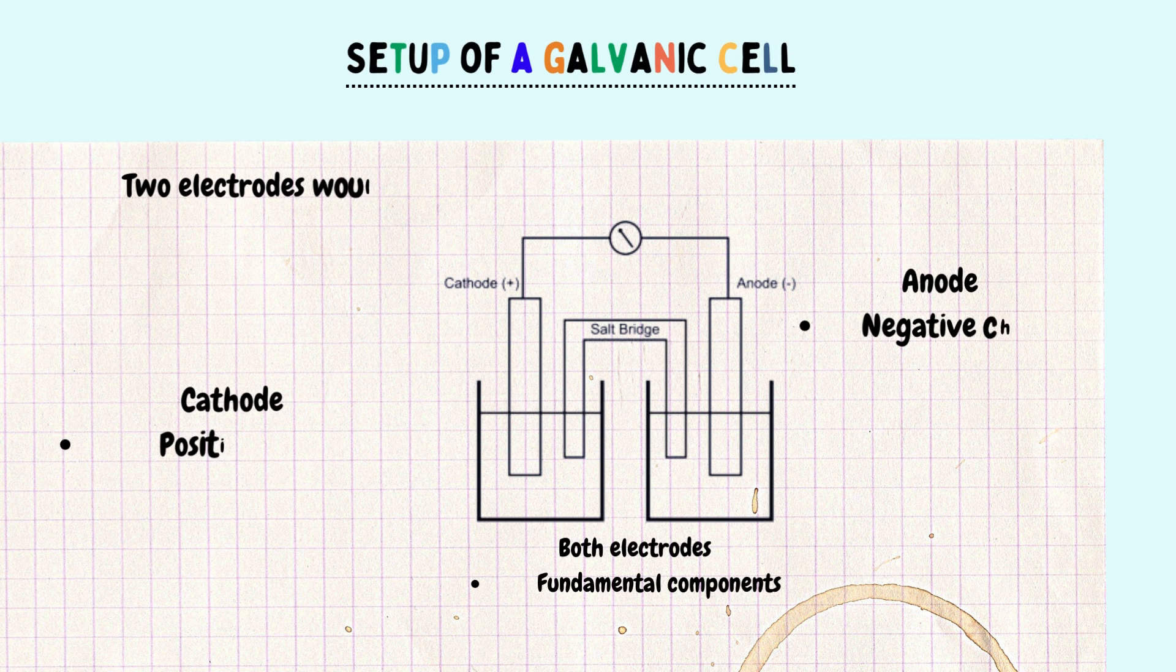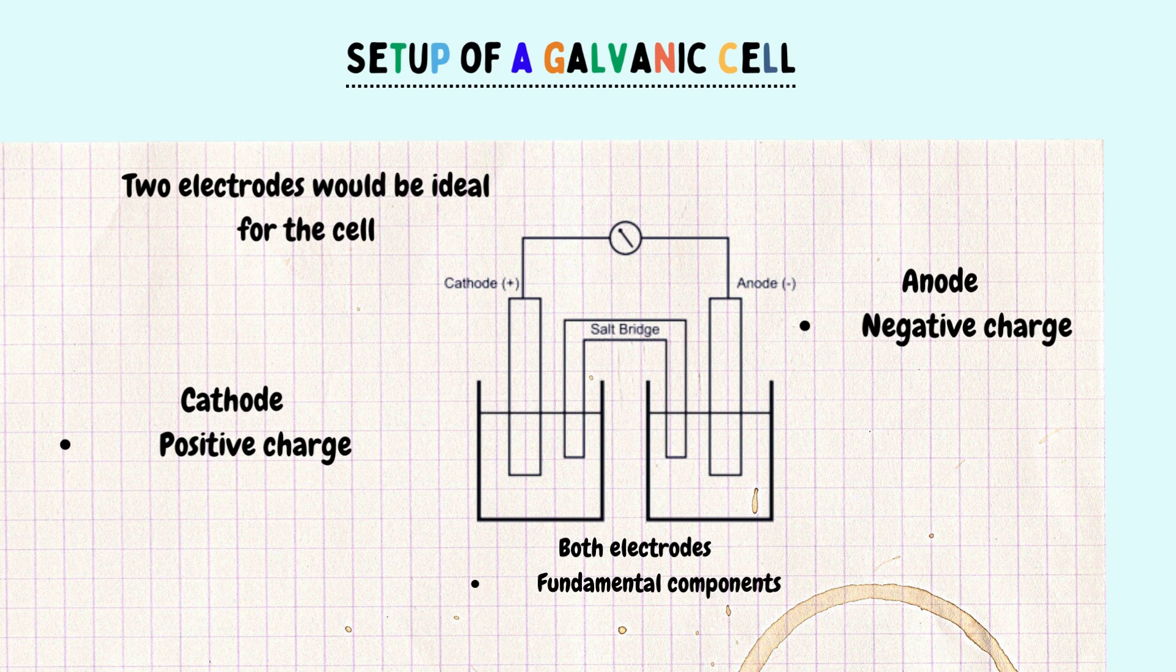Setup of a galvanic cell. Two electrodes would be ideal for the cell. One of these electrodes, the cathode, must be positively charged. While the other, the anode, must be negatively charged.